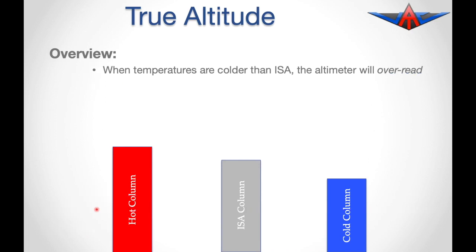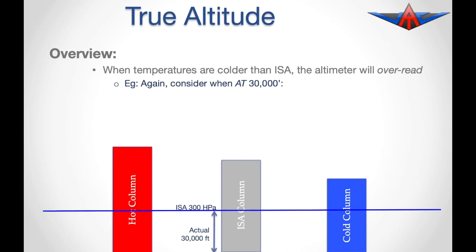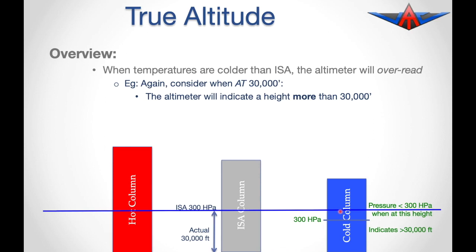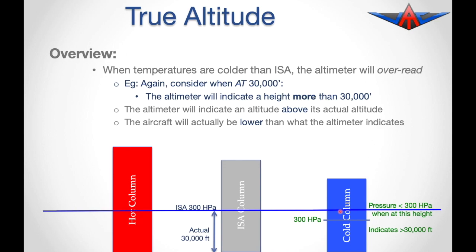The opposite situation is true when conditions are colder than ISA — the altimeter will over-read. If we are at 30,000 feet, in ISA conditions that would be at 300 hectopascals. But on a cold day, 300 hectopascals is lower. Therefore our pressure is less than 300 hectopascals at 30,000 feet, so the altimeter will indicate greater than 30,000 feet even though we are actually at 30,000 feet. The aircraft is actually lower than what the altimeter indicates on a cold day.